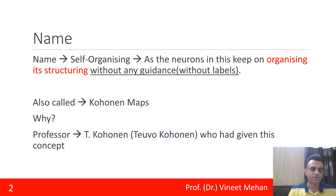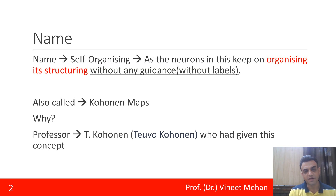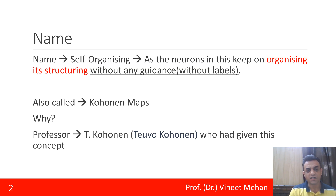So first of all, why do we name it self-organizing? The name is so-called self-organizing because in this, the neurons keep on organizing their structure without any guidance, without any labels. That means it is completely an unsupervised form of learning. That is why we say that this is self-organizing.